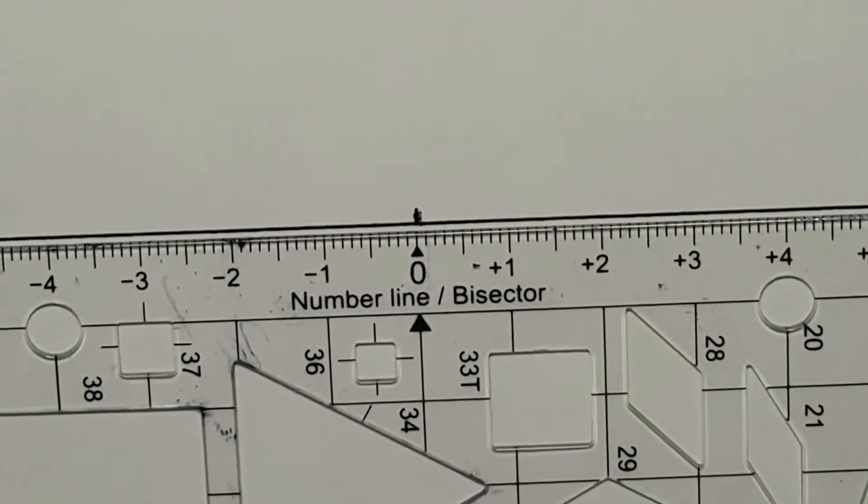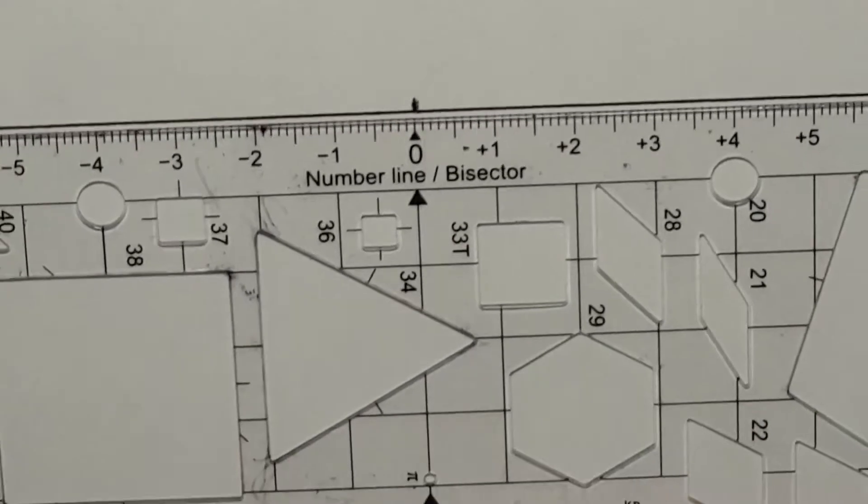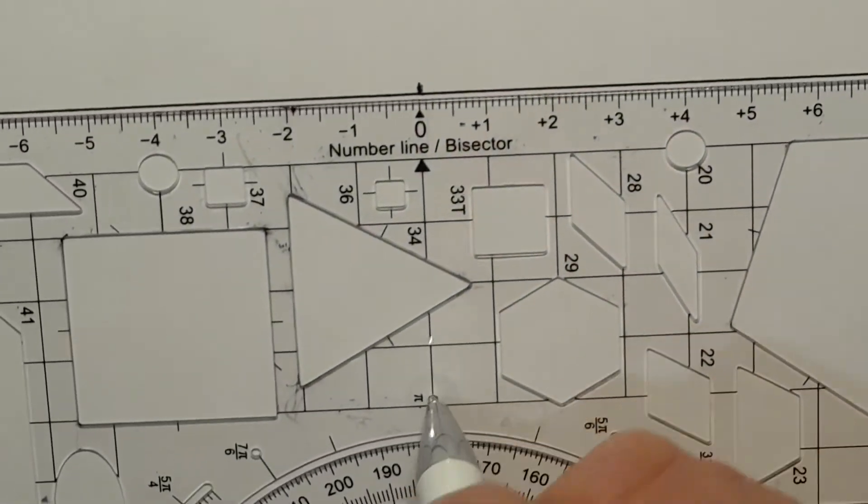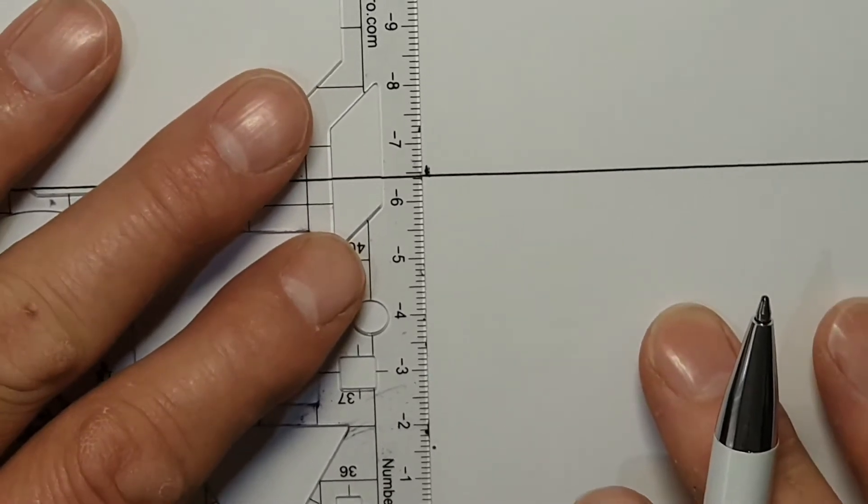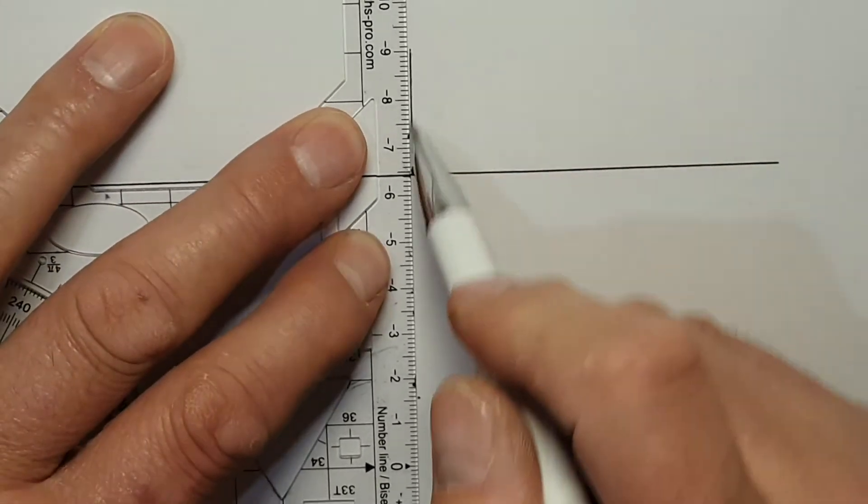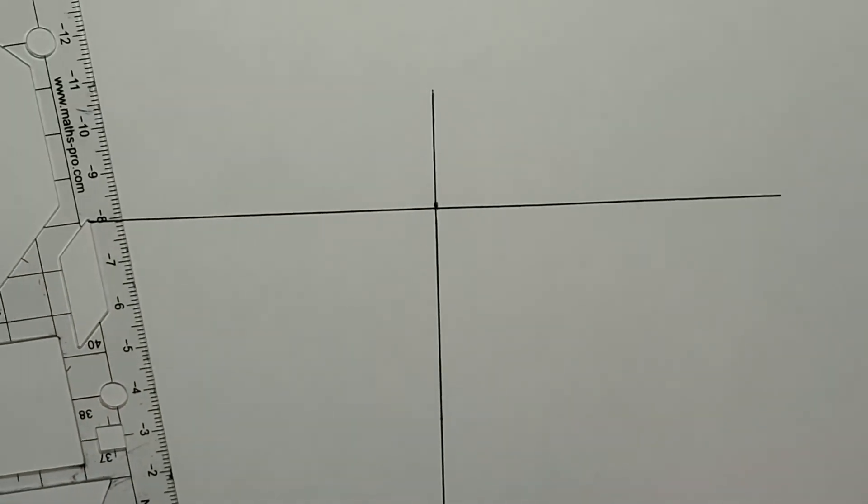If I want a perpendicular bisector, I could also mark the protractor center or a hole on this side of the protractor and then turn things around and join them up, and there's a perpendicular bisector.